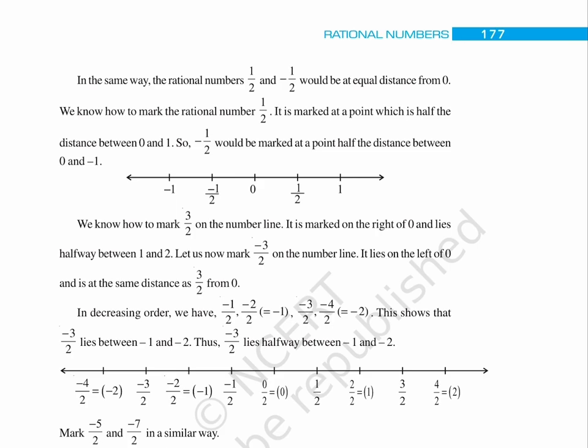Page 177. In the same way, the rational numbers 1 upon 2 and minus 1 upon 2 would be at equal distance from 0. We know how to mark the rational number 1 upon 2. It is marked at a point which is half the distance between 0 and 1. So, minus 1 upon 2 would be marked at a point half the distance between 0 and minus 1. We know how to mark 3 upon 2 on the number line. It is marked on the right of 0 and lies halfway between 1 and 2. Let us now mark minus 3 upon 2 on the number line. It lies on the left of 0 and is at the same distance as 3 upon 2 from 0.